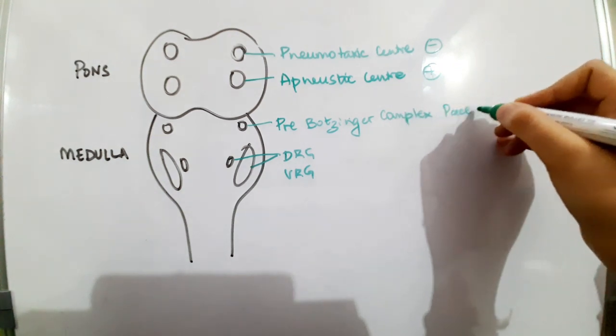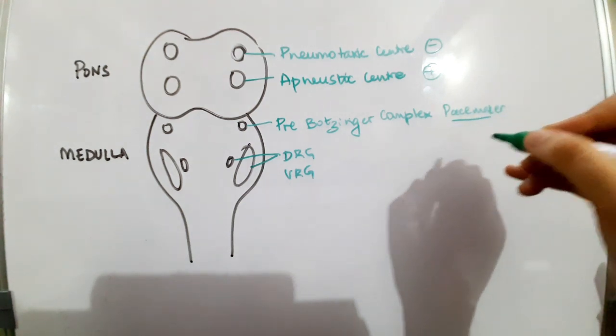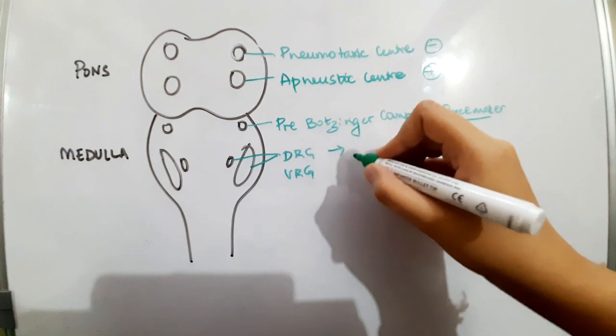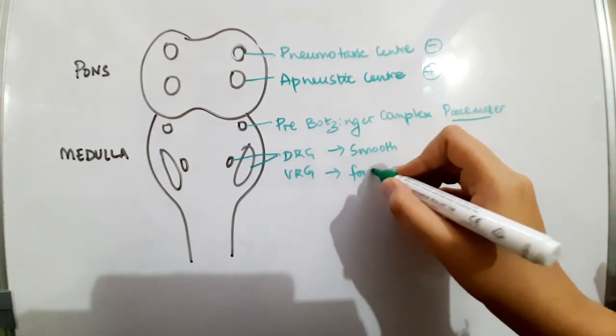The pre-bötzinger complex in the medulla is the pacemaker. The dorsal respiratory group makes respiration smooth, and the ventral respiratory group is involved in forceful expiration.